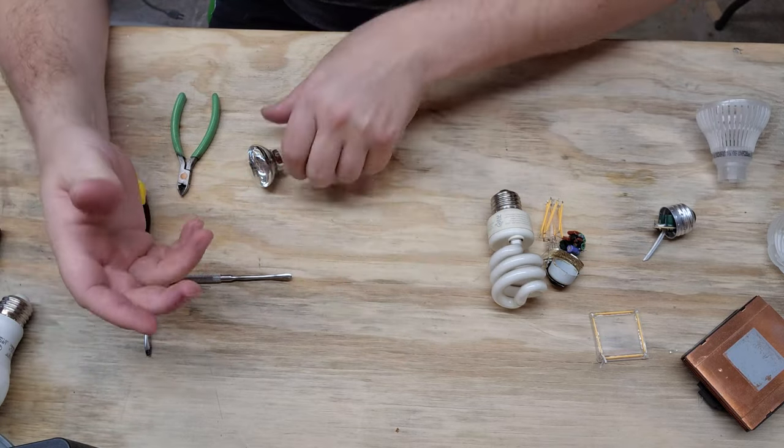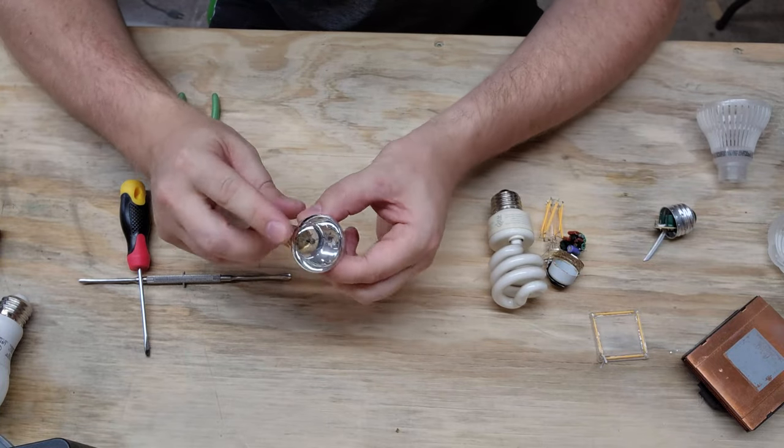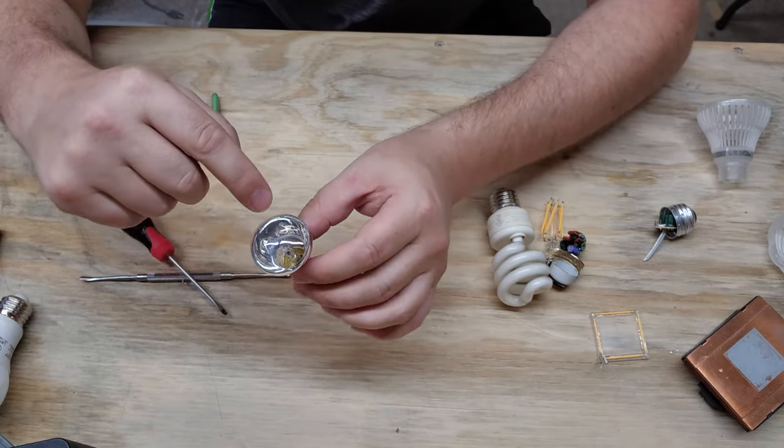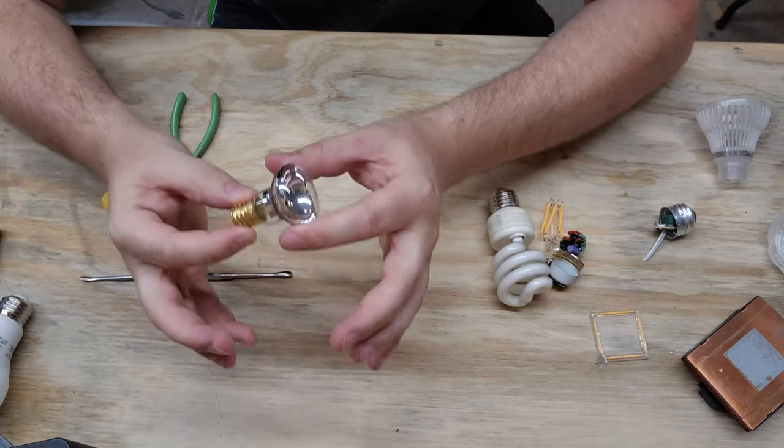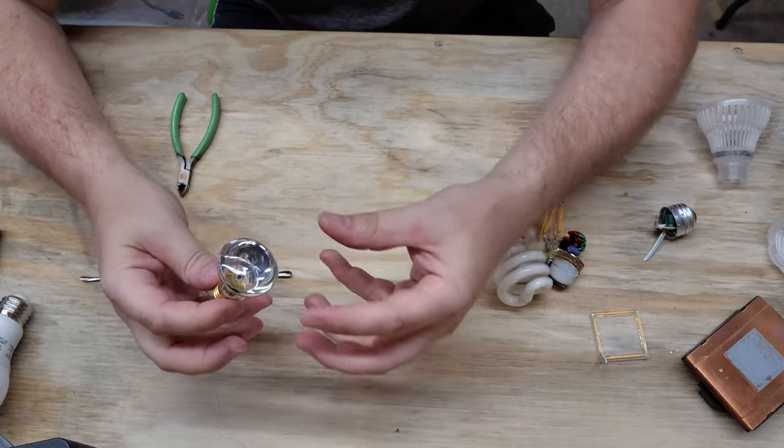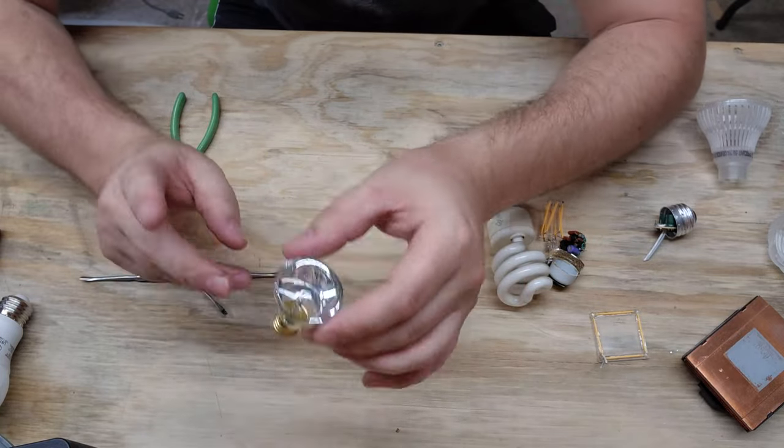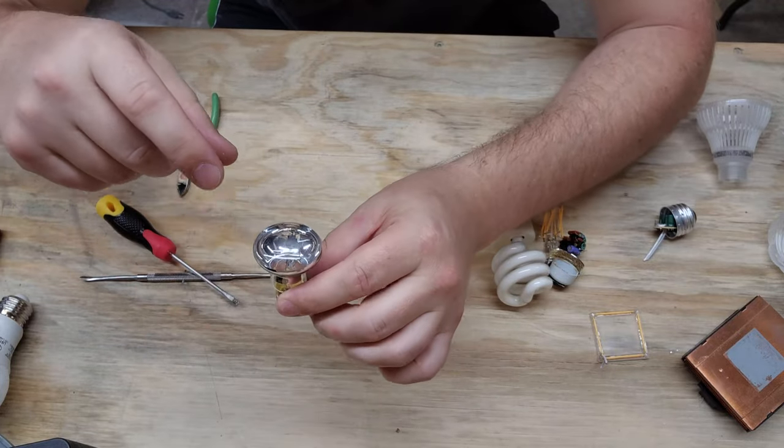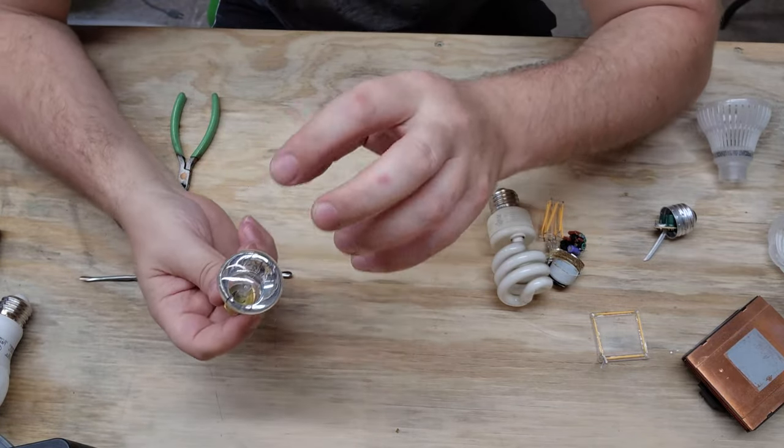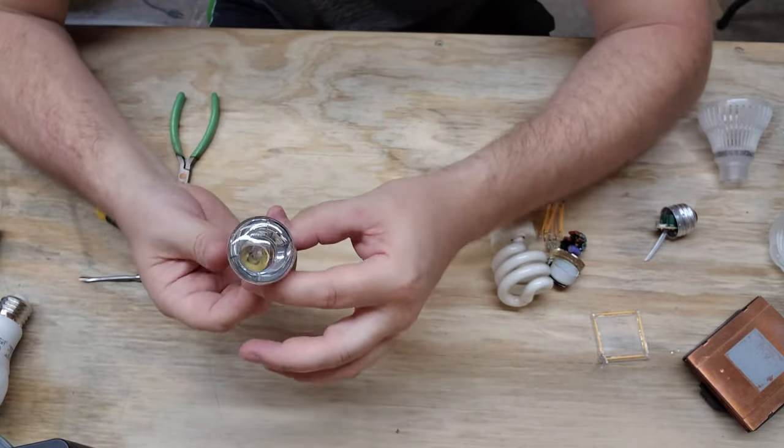So first off, let's go over some of the background history to bulbs and I have a perfect example right here. This is an incandescent bulb and it's an incandescent bulb because there's a pressurized gas inside the chamber of the bulb and there's a filament which operates at the mains voltage. So if you have 120 volts coming in, that little filament right there is burning or heating up at the mains potential, which is 120 volts.